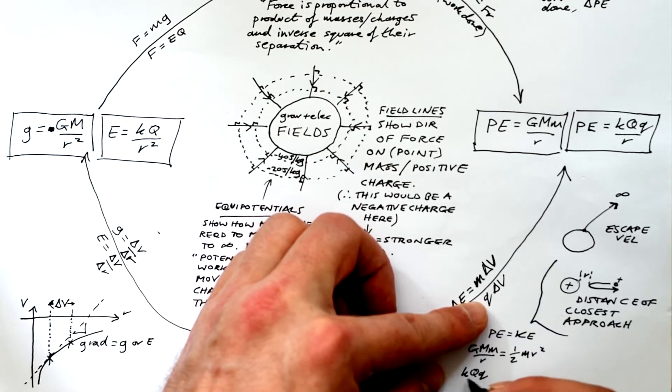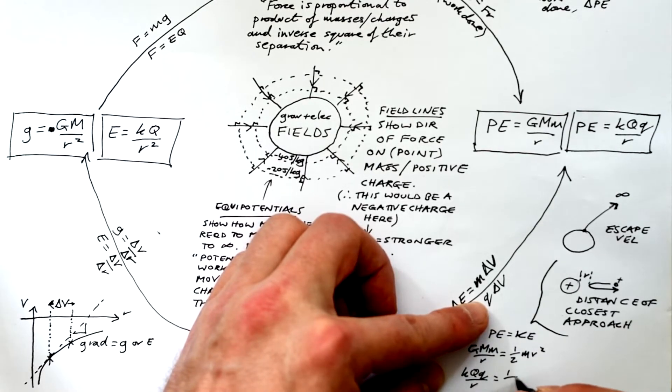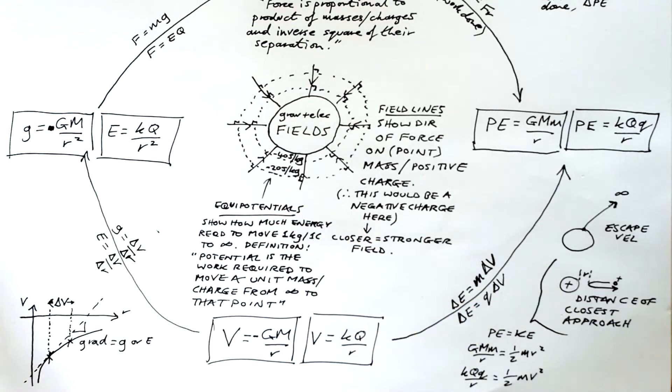So GMm over r equals half mv squared and one of the m's cancels. And kQq over r equals half mv squared.